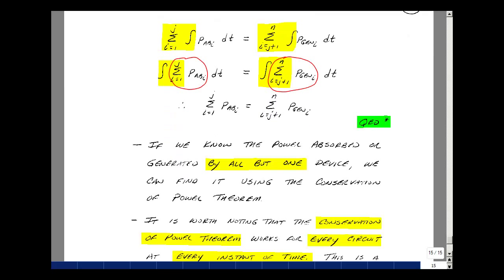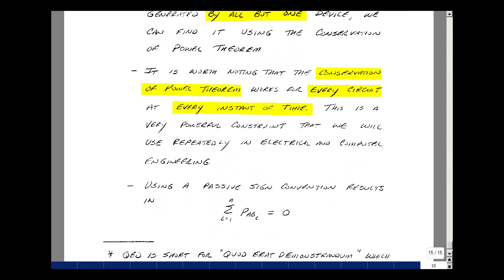If we know the power absorbed or generated by all but one device in a circuit, we could use the conservation of power theorem to figure out the remaining one.